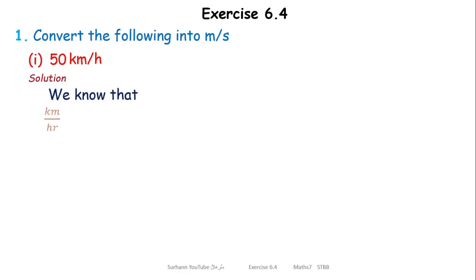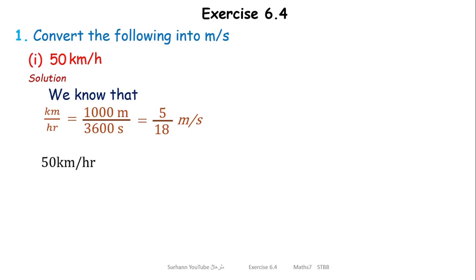In our previous video lecture, we learned that 1 km per hour is equal to 5 over 18 meter per second. To convert 50 km per hour into meter per second, we multiply it by 5 over 18.